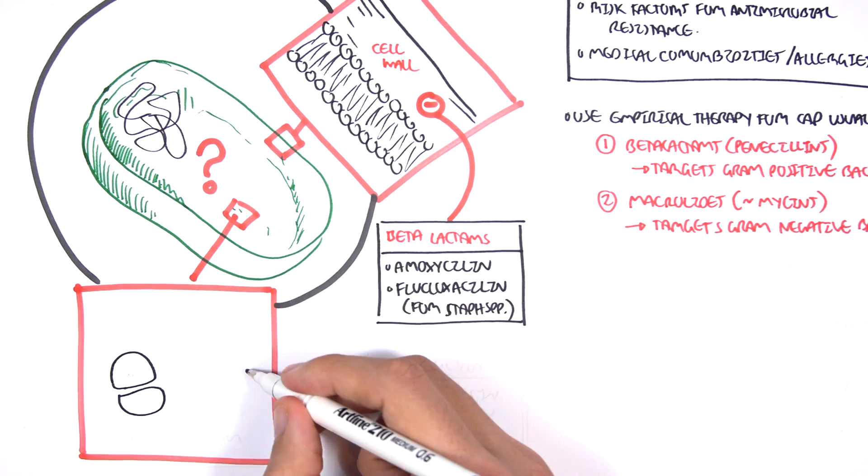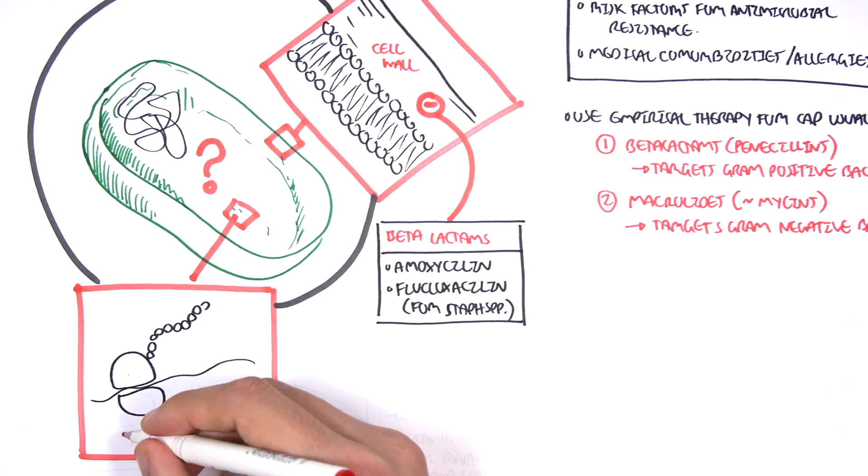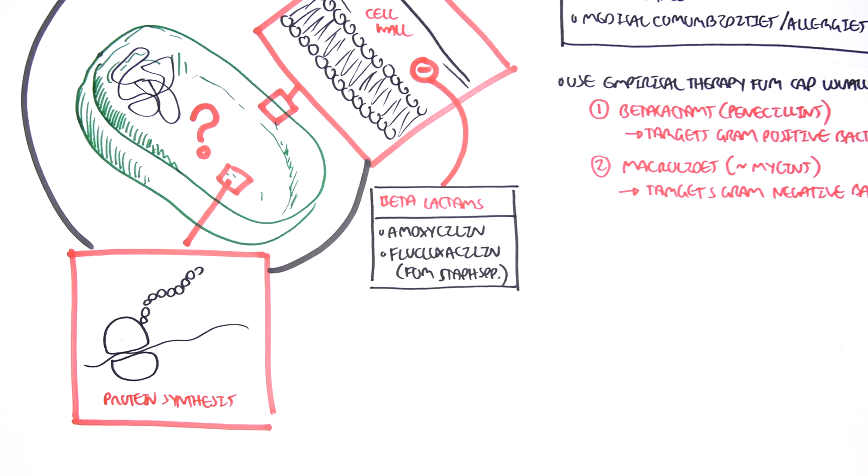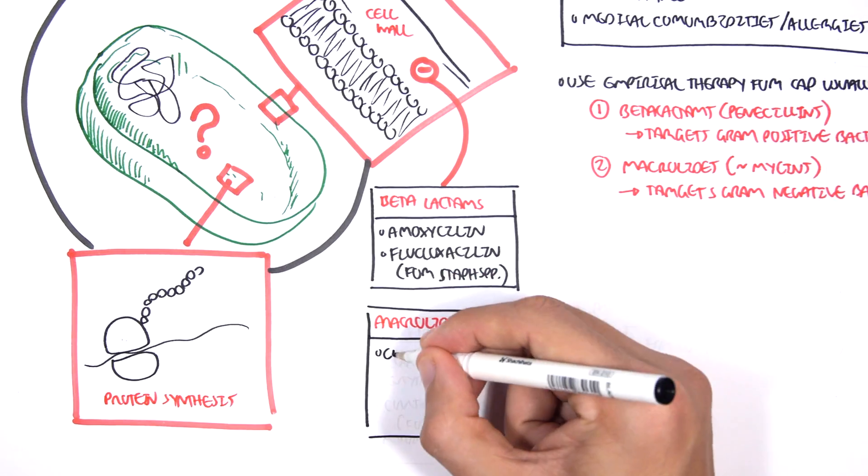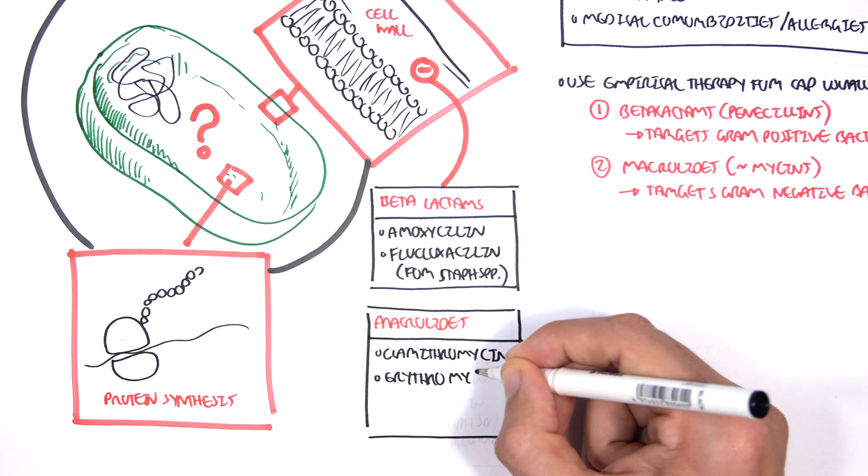So in the bacteria, bacteria make proteins all the time. The macrolides inhibit this process. Macrolides including clarithromycin and erythromycin are used.